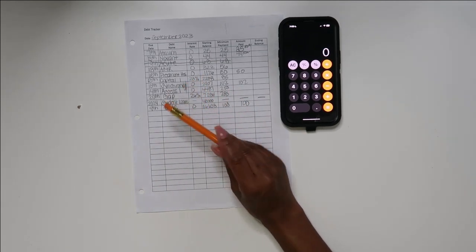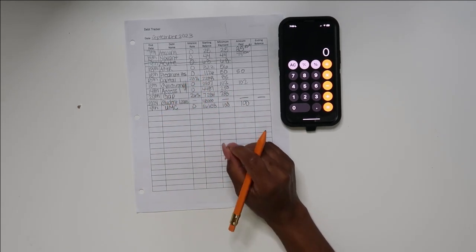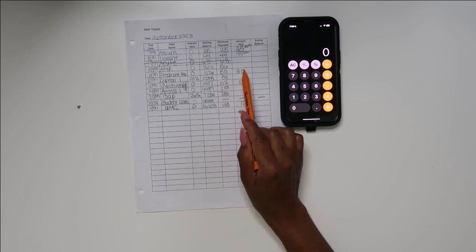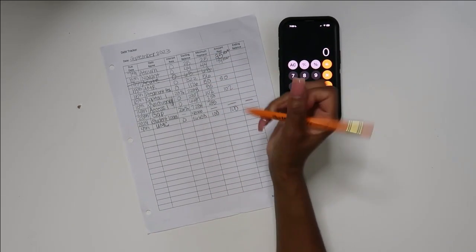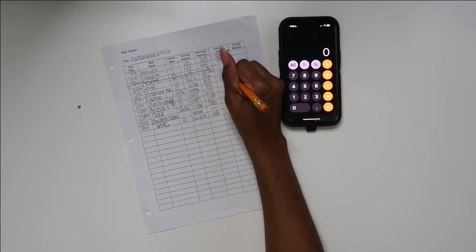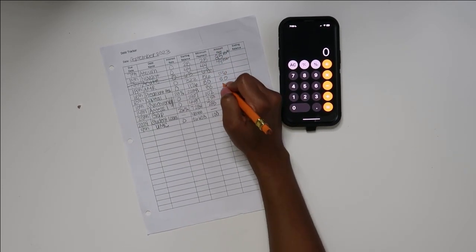So today is September 19th. So far I have paid, let me just write it in. So AMR I paid $56 yesterday.